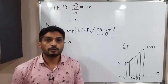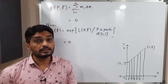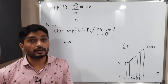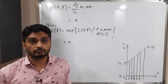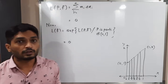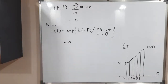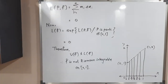The value of the lower integral is 0 and the value of the upper integral is 3/2 — both are different. Therefore, since the upper integral is not equal to the lower integral, the function is not Riemann integrable on the closed interval [0,1].